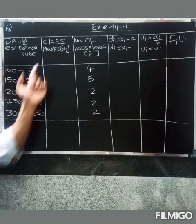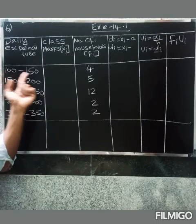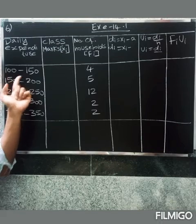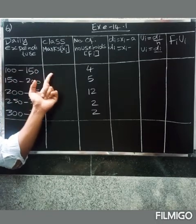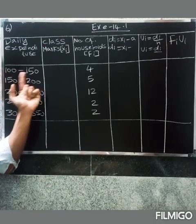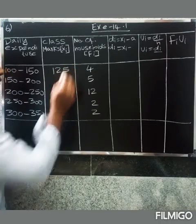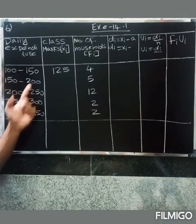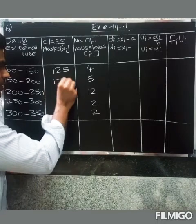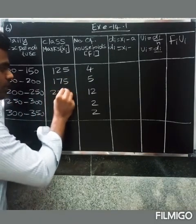First we will find the class marks. The class mark is the middle value of each class interval — we add the two boundary values and divide by 2. For 100 to 150, the middle value is 125. For 150 to 200, the middle value is 175. For 200 to 250, the middle value is 225.